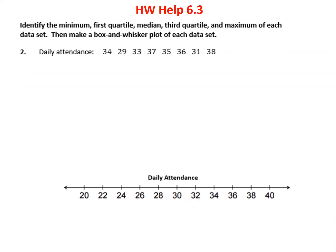In our second problem, again we're going to find the minimum, the first quartile, the median, the third quartile, and the maximum. Our first step is always to put them in order. My smallest number is 29, so I'll put that over here. And my largest number is 38, so I'll put that over here. Then we fill in the numbers in order: 34, 33, 37, 35, 36, and 31.